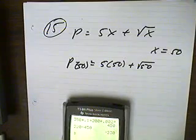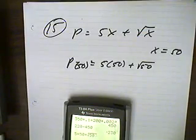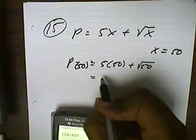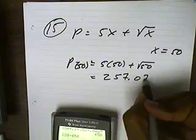5 times 50 plus the square root of 50. That gives us a profit of $257.07.